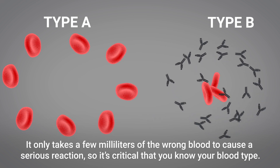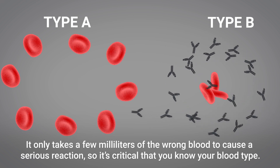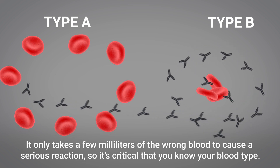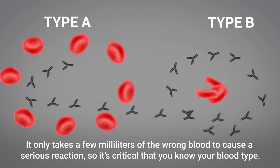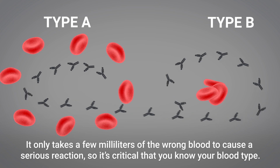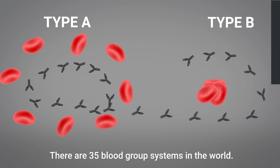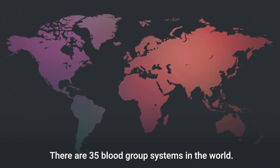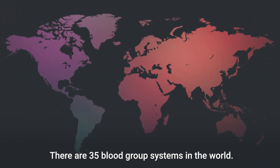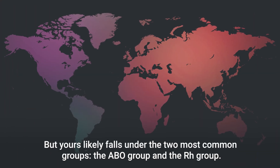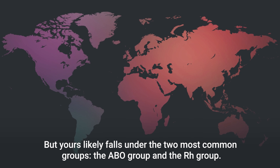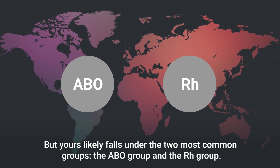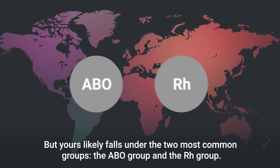It only takes a few milliliters of the wrong blood to cause a serious reaction, so it's critical that you know your blood type. There are 35 blood group systems in the world, but yours likely falls under the two most common groups: the ABO group and the RH group.